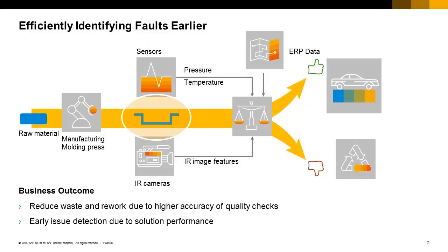The temperature of the part before entering and after leaving the press is measured, along with the mean pressure applied and duration of this process. This data is streamed into HANA using Kafka Streaming. To enrich the data, a thermal image is taken of the parts before and after the press.